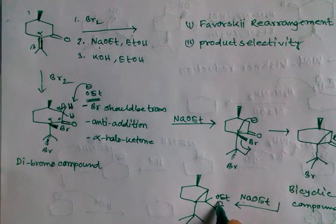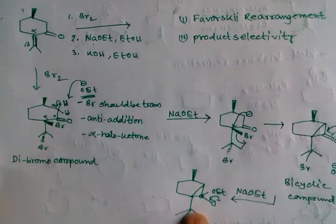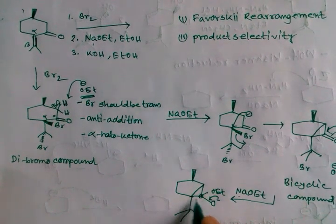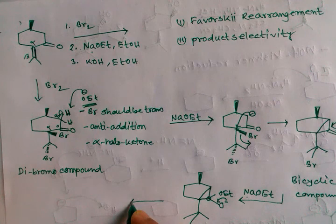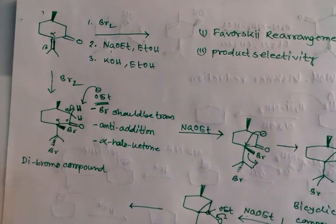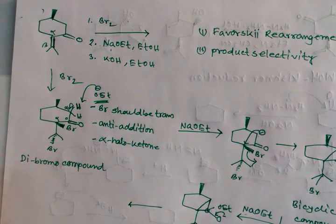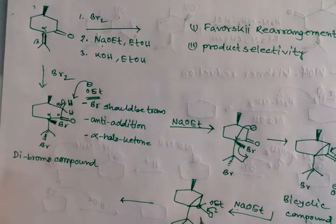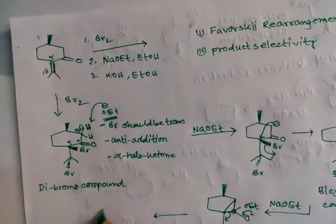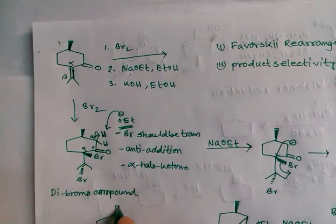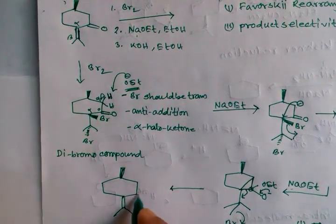Now when this negative charge forms, the valence of this carbon increases, so one of these two bonds migrates. In the case of a dihalo ketone — this is a dihalo ketone — we generally get an alpha-beta unsaturated ketone, so this bromine goes out.